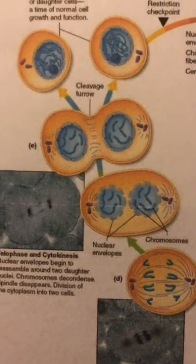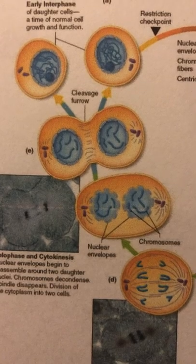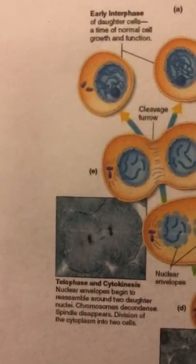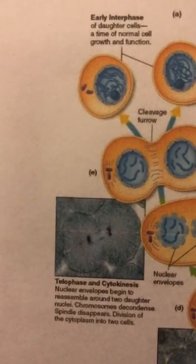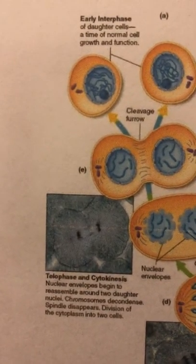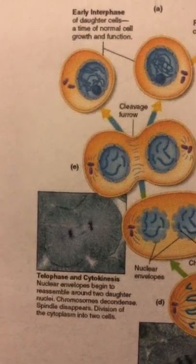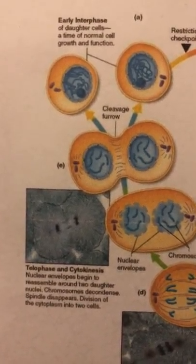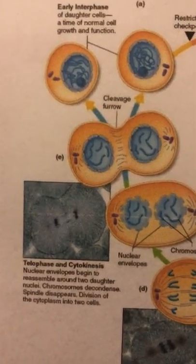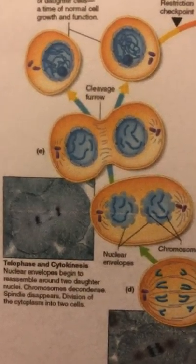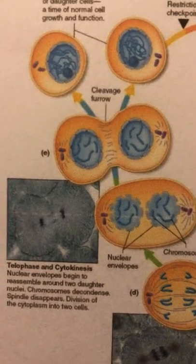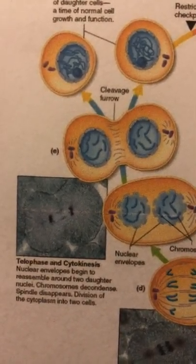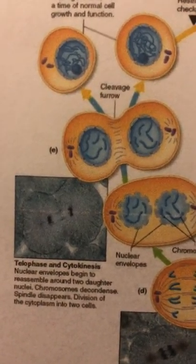The final stage of the cell cycle is cytokinesis, which is the separation of the newly formed cells. The cells are separated by a contractile ring that divides the cell into two cells that are comparable in size.